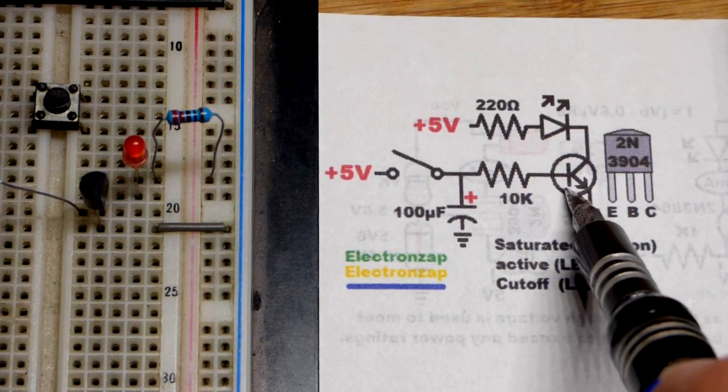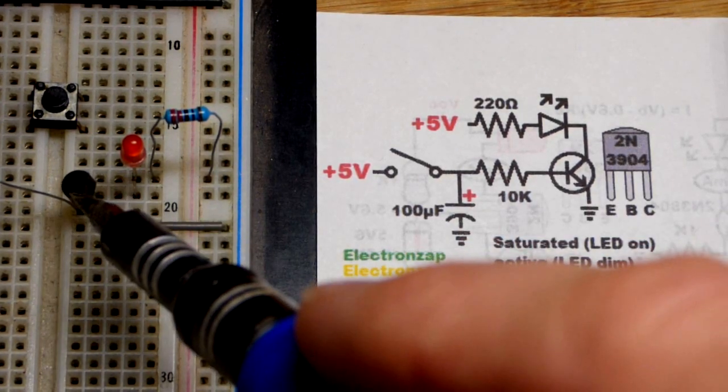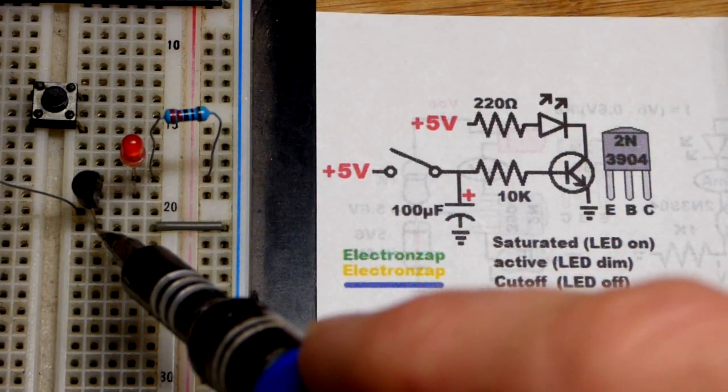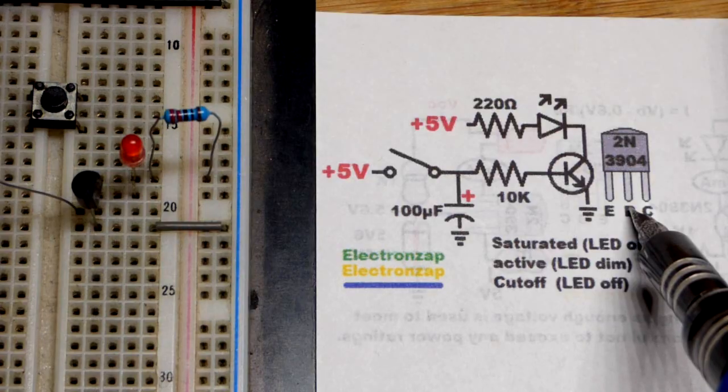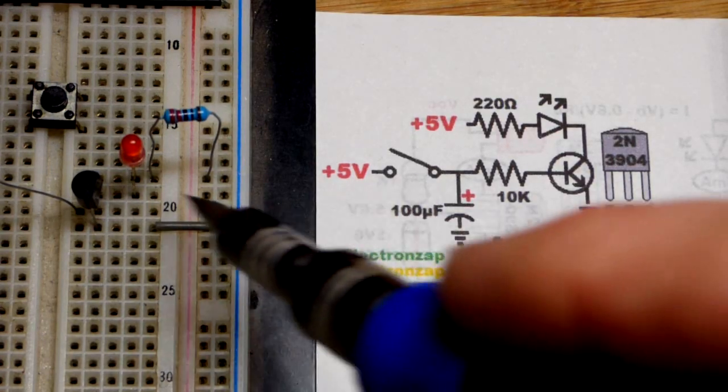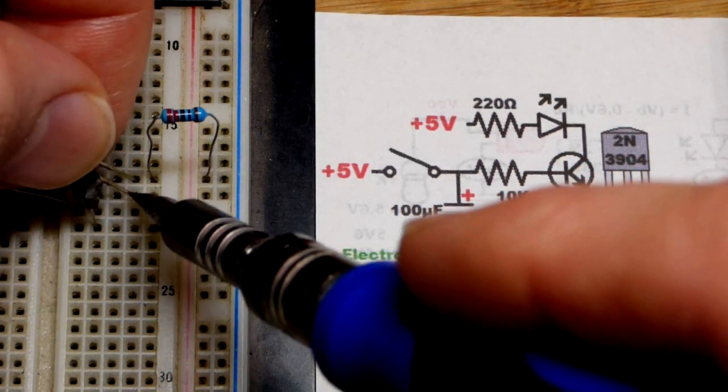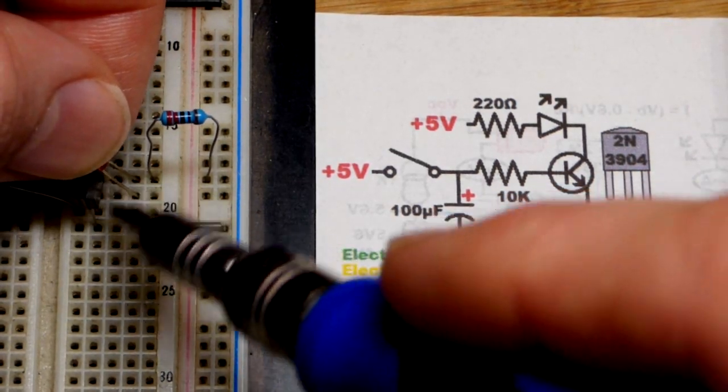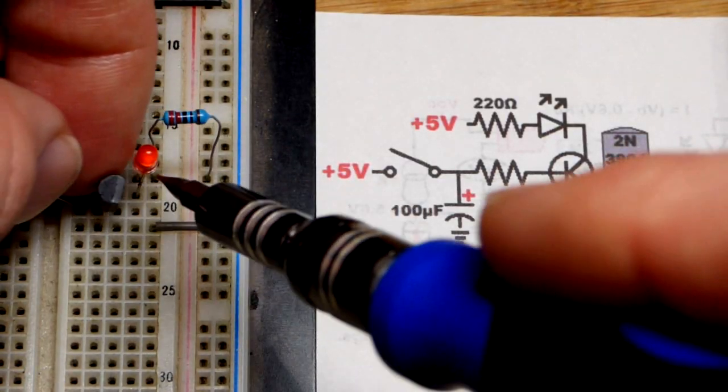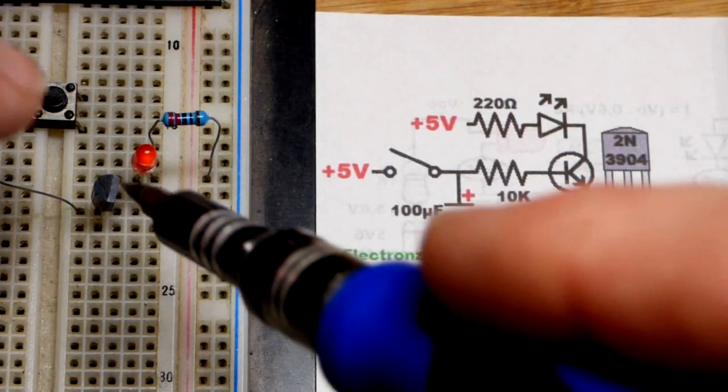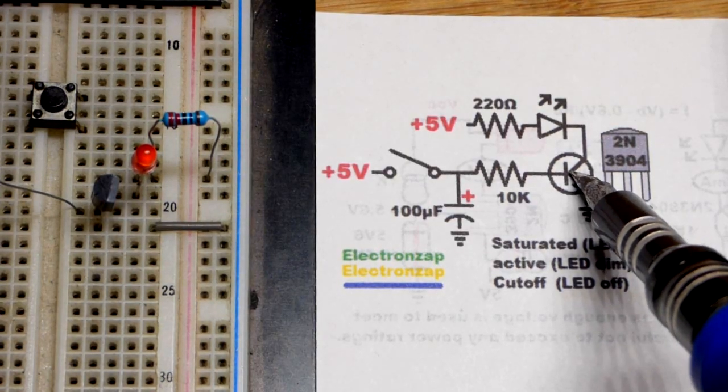So now being a switch, the NPN bipolar junction transistor, I'm using a 2N3904. Bottom pin there is the emitter. There you can see it's the left when you're looking at the front. Base is in the middle and then collector on top right there or to the right when you're looking at it flat. Remember, you got to put the LED in the right way. Short lead the cathode towards negative, long lead the anode towards positive for it to light up. It's not lighting up right now because the transistor is not conducting. It's an off switch. Basically, it's an insulator.